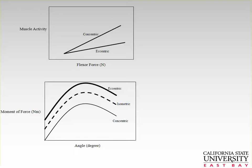Another way to look at this: to go the same mileage, concentric needs more gas than eccentric. Eccentric is very fuel efficient — if you're fuel efficient, you can go longer or generate more force. If you hold muscle activation constant, at a certain activation level you can generate less flexor force during a concentric contraction than during an eccentric contraction.